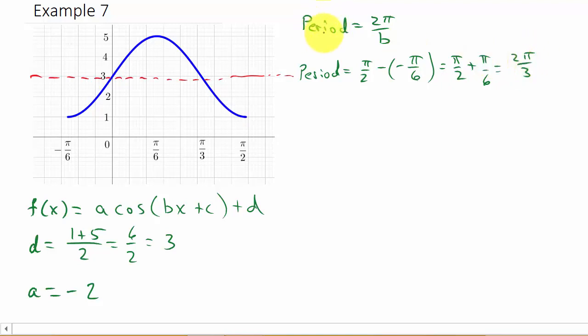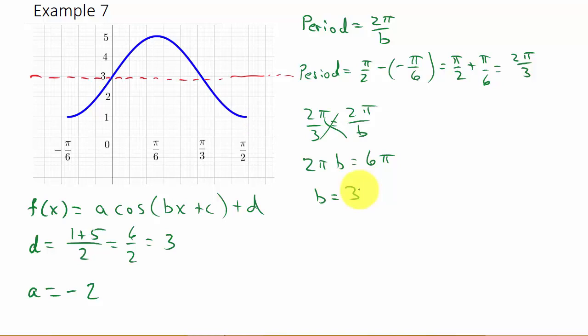Okay. So, that's the length of the period. That would be what this is. So, if we plug the 2π over three and replace it, replace period with the 2π over three, well, that's 2π over three is equal to 2π over b. And then, if we solve for b, well, we're going to cross multiply. So, that's going to give me 2πb equals 6π. So, b is equal to three.